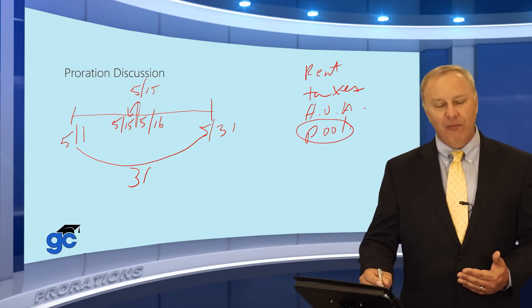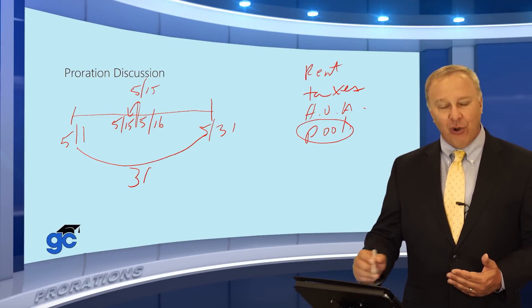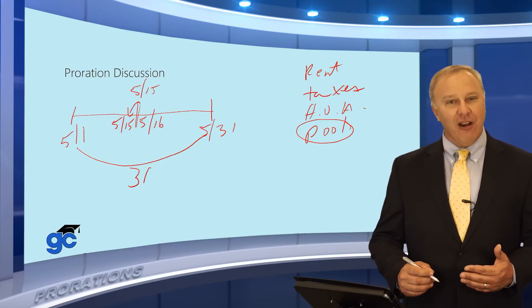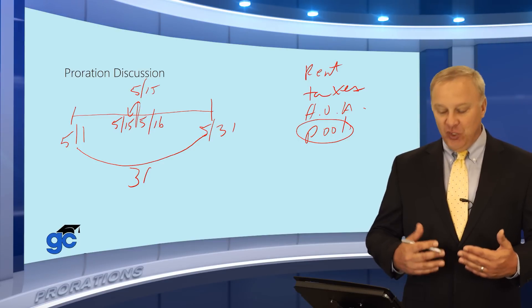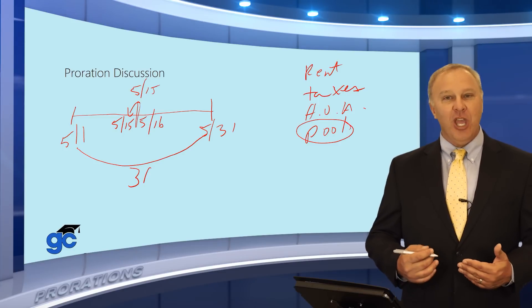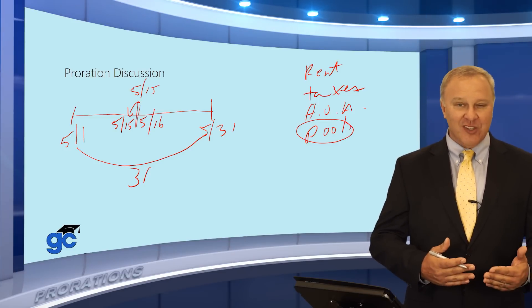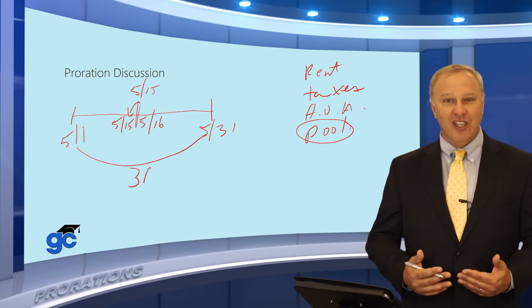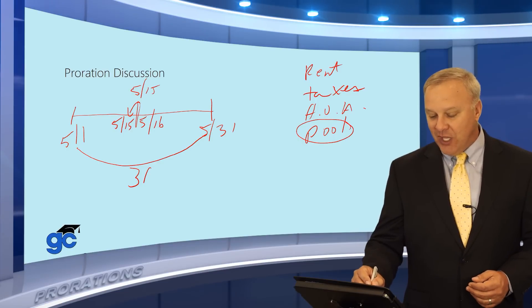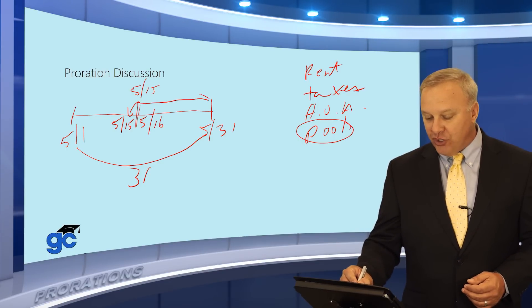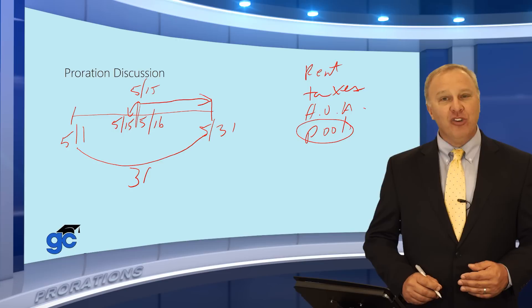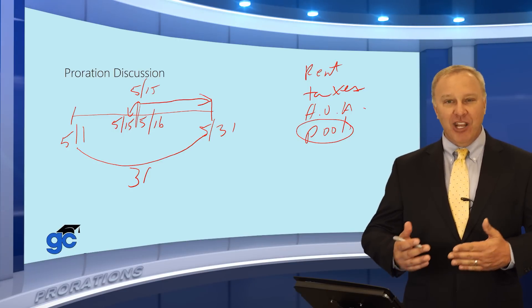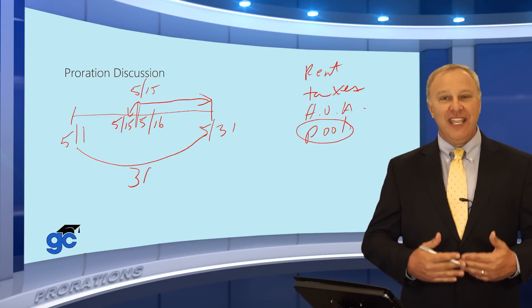Now what we have to prorate or figure out is who gets credit for what. Well, if the seller paid the pool maintenance on the first, they paid for 31 days, but they only lived there for 15 days. So what happens is at closing, the buyer will need to reimburse the seller for that portion that the seller has already paid for, but not used. In this case, the buyer will be charged for these days. A charge is going to be a debit and that money will go to the seller. That would be a credit.